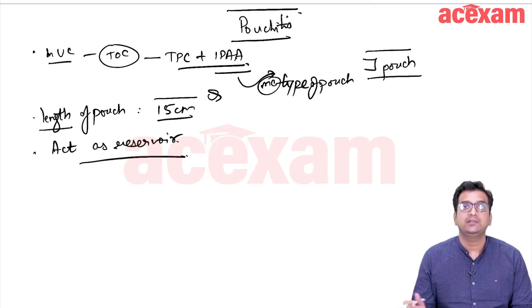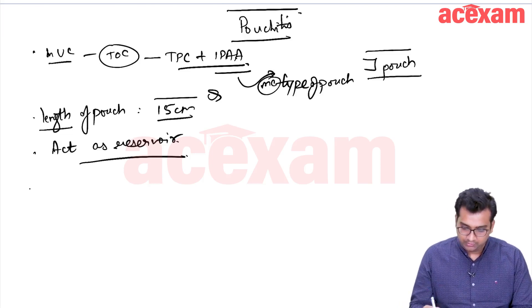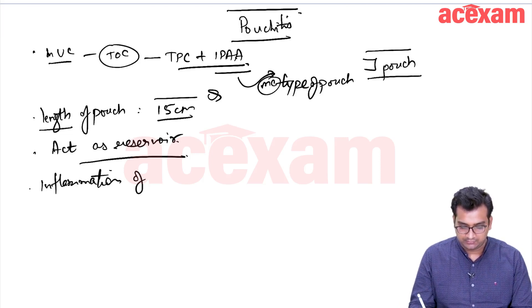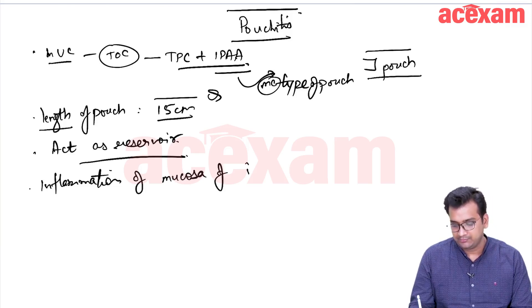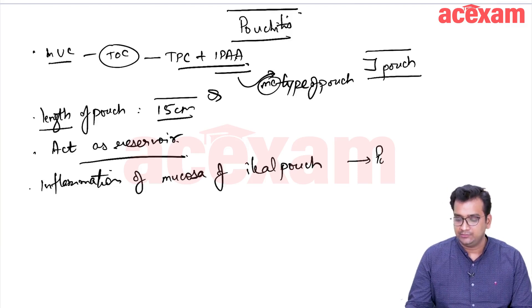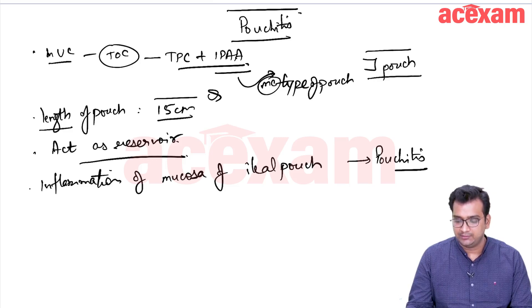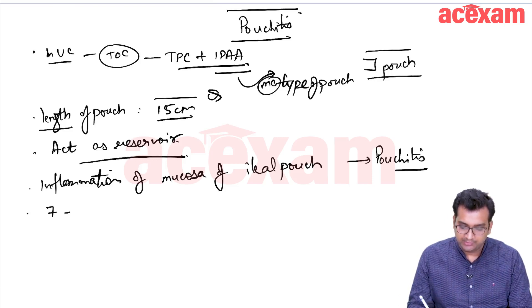This pouch acts as a reservoir in place of rectum. It helps in decreasing the frequency of motion and it helps in absorption also. Now, if there is inflammation of the pouch, inflammation of mucosa of ileal pouch, then it is known as pouchitis.